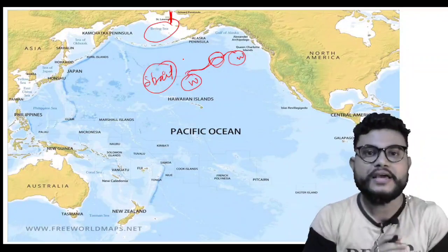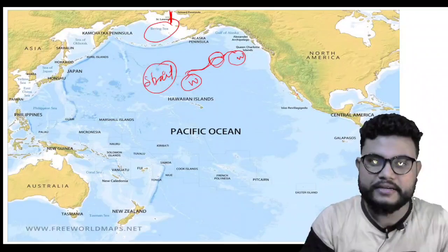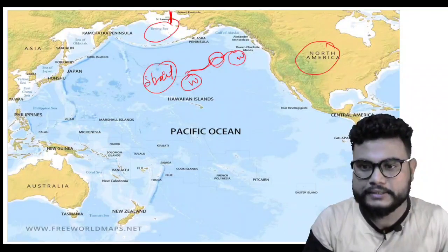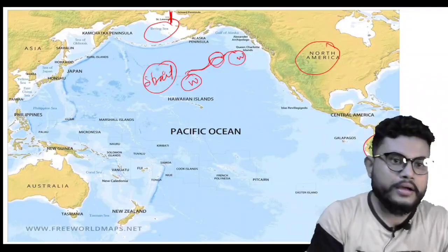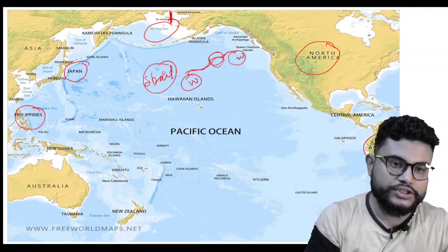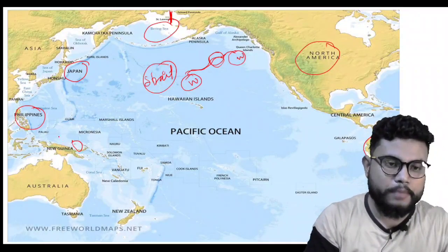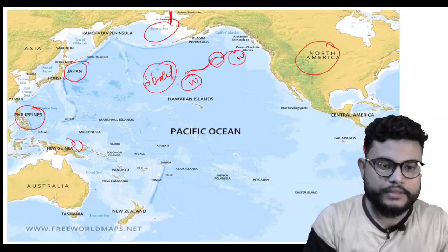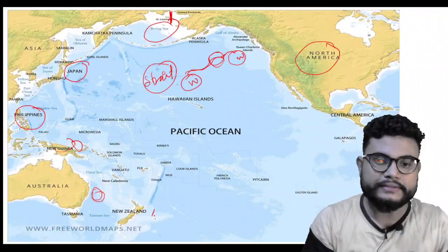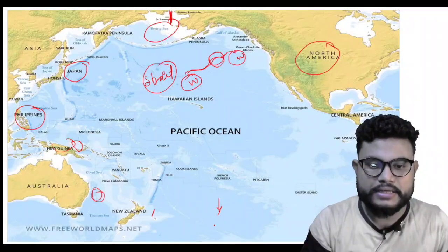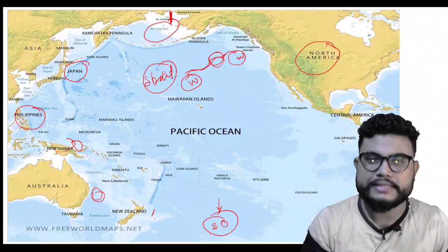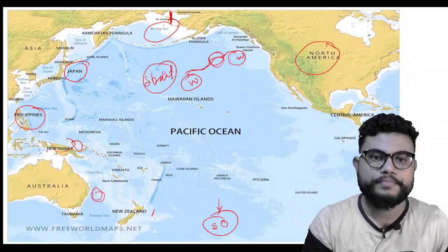To the east of Pacific Ocean we have North America as well as South America. To the west we have Japan, Philippines, Indonesia, Papua New Guinea, then Australia and New Zealand. And to the south comes the Southern Ocean. That is the boundary and location of Pacific Ocean.